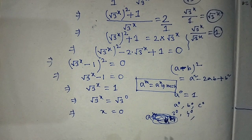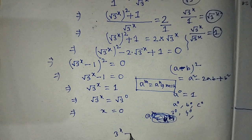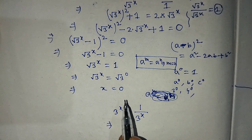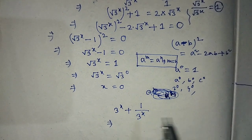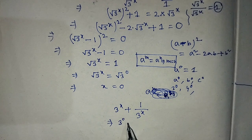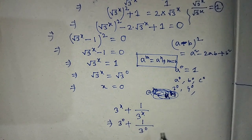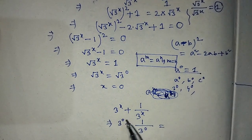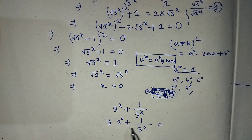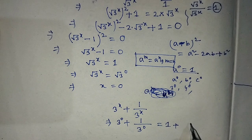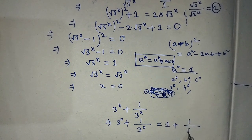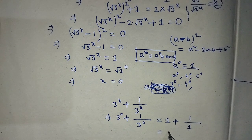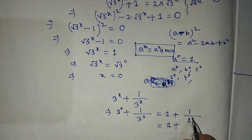Now we can easily find the value of 3 to the power x plus 1 over 3 to the power x. We substitute x equals 0, giving 3 to the power 0 plus 1 over 3 to the power 0. Since a to the power 0 equals 1, we apply this formula: 3 to the power 0 is 1, and again 3 to the power 0 is 1 in the denominator. So we get 1 plus 1 divided by 1, which equals 1 plus 1.